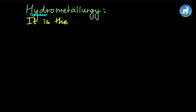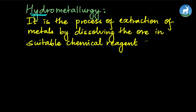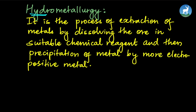Hydrometallurgy: it is the process of extraction of metal by dissolving the ore in a suitable chemical reagent and then precipitation of the metal by a more electropositive metal. The ore is dissolved in the suitable chemical reagent, making it soluble, and then a more electropositive metal like zinc is used to precipitate the desired metal.